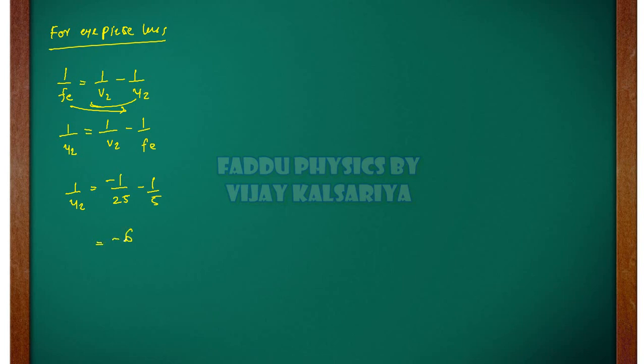So this will be minus 6 by 25. So u2 is equal to minus 25 by 6. Simplify it. It will be minus 4.17 cm.